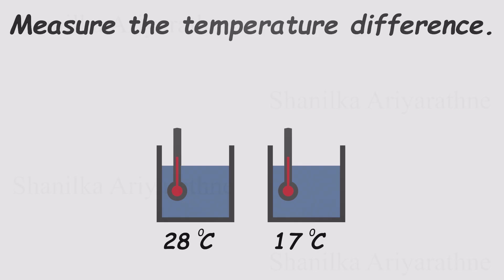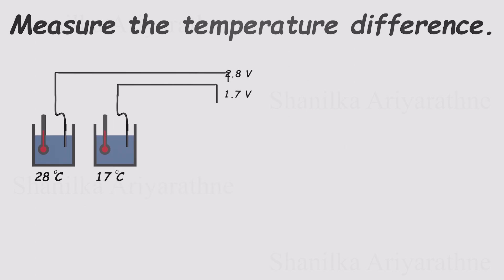The first step is easy. Drop a temperature sensor in each container. Each sensor spits out a voltage that tracks the water's temperature. But here's the puzzle. How do we take those two voltages and get just their difference?